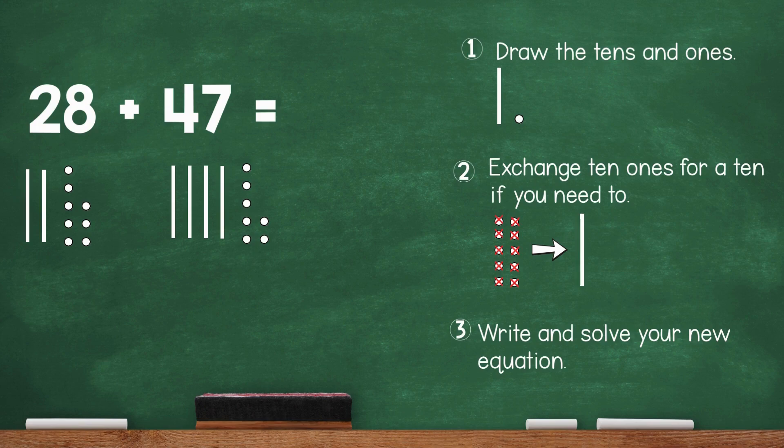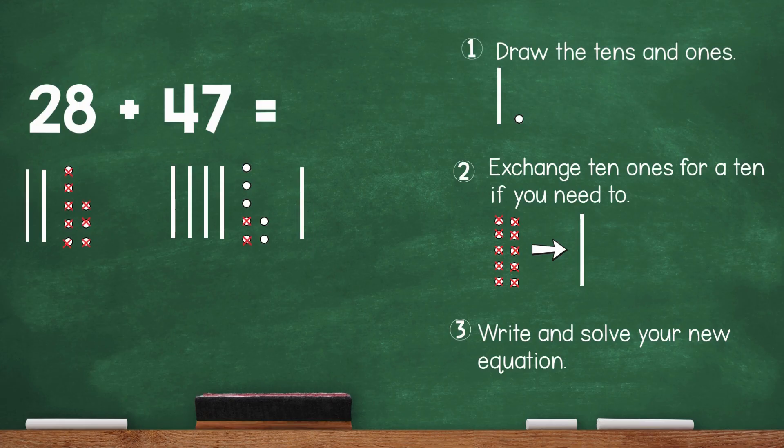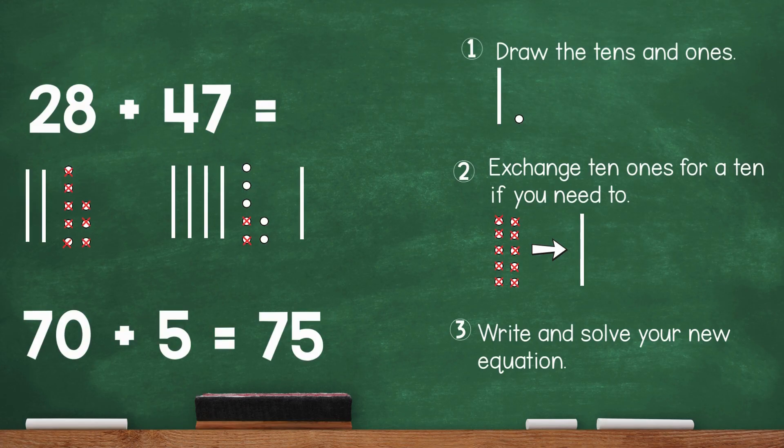Here's the problem with the tens and ones drawn out. First, I added the ones. There were 15 ones, so I crossed out 10 of them and exchanged them for a 10. Then, I wrote the new problem with the tens and ones I now have. Since I now have 7 tens and 5 ones, my new problem is 70 plus 5 which equals 75. So, 28 plus 47 equals 75.